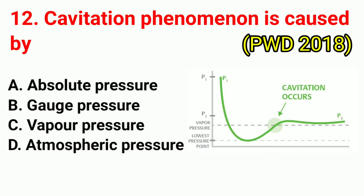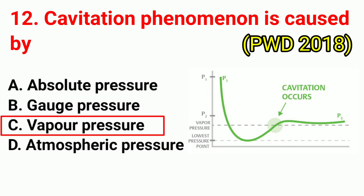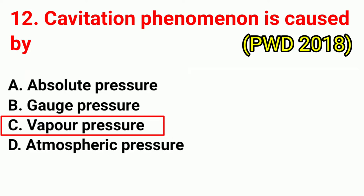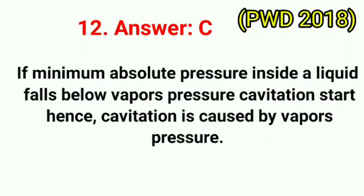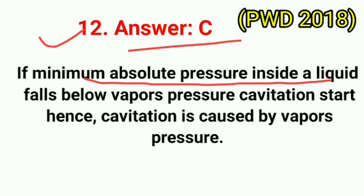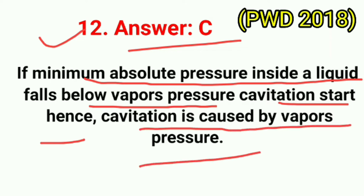Question No. 12. Cavitation phenomenon is caused by? Correct answer is option C: vapor pressure. If minimum absolute pressure inside a liquid falls below vapor pressure, cavitation starts. Hence, cavitation is caused by vapor pressure.